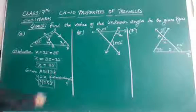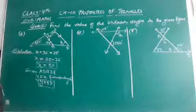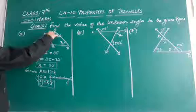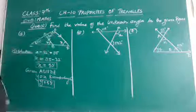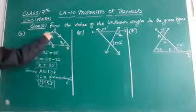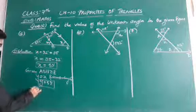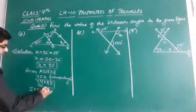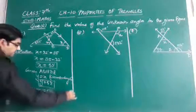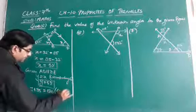Now, this 85 and this angle z forms the co-interior angles. And the sum of co-interior angles is 180 degree. Because AB and DE are parallel. So, z plus 85 is equal to 180. Reason is co-interior angles.